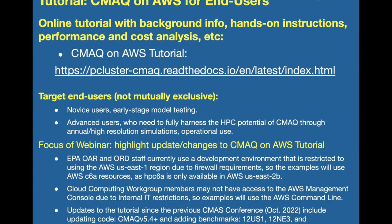The tutorial I'm describing is available online and targets both novice and advanced users. We're currently providing benchmark cases that you can reproducibly run CMAQ and verify that the output is correct. This tutorial covers a method using resources available to EPA, since folks at EPA have access only to a certain region of AWS — US East 1. We've also heard feedback that folks may or may not have access to the AWS Management Console, so this webinar will describe ways of using the AWS command line if you don't have access to the Management Console.